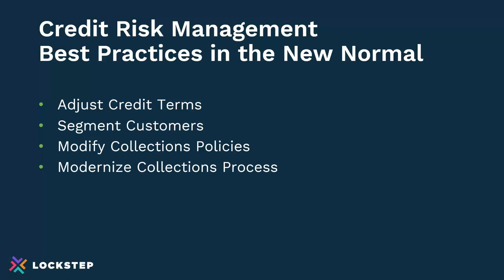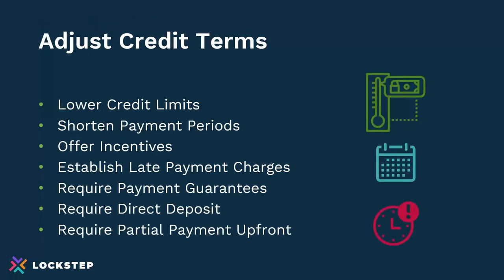To manage credit risk in the new normal, you need to strengthen the policies and processes. We host a customer community to listen to what everyone's doing, and our customer success team works directly with customers to optimize their processes. One thing is really thinking about how you adjust credit terms to match the new risks. Also, starting to segment customers based on emerging risks. Modifying your collections policies — you may have been more lax in the past and now want to change those. And also thinking about modernizing your collections process. Let's dig into each of these.